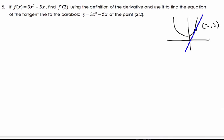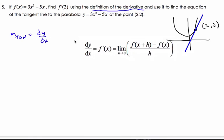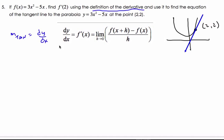I do know that at this point (2,2), I'm asked to find this tangent line. I'm going to find the equation of that tangent there. We know that the derivative is equal to the slope of the tangent. The slope of the tangent is equal to the derivative dy/dx. And we're told to use the definition of the derivative.